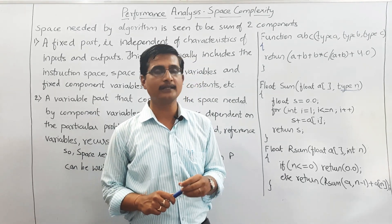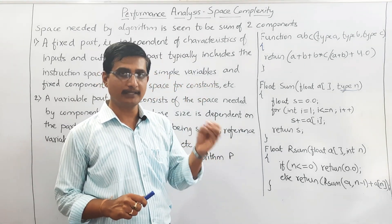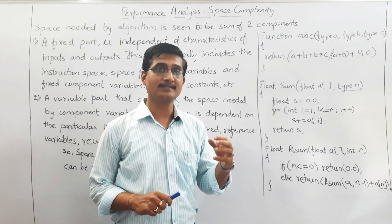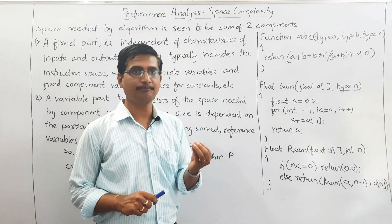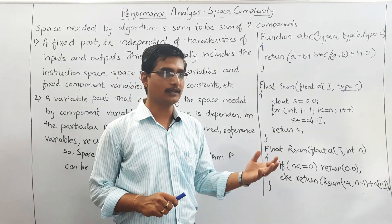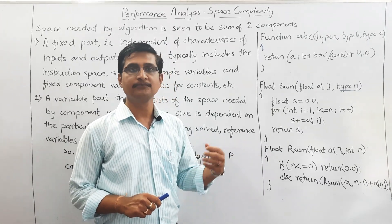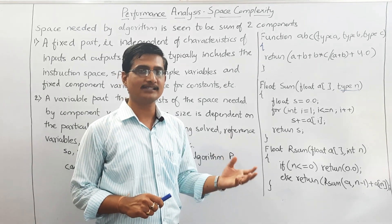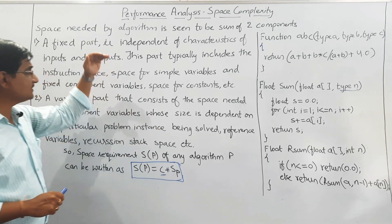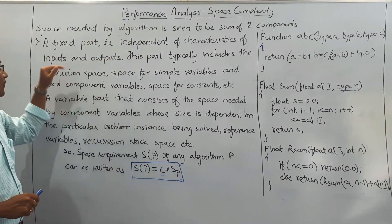In the fixed component, only the algorithm's instruction space and simple variables will be there. In the variable part, which is dependent on the input characteristics or the problem at hand, which is considered as the input and the output generated by the algorithm for that instance — that will be the second part. So the space needed by the algorithm is the sum of these two components.